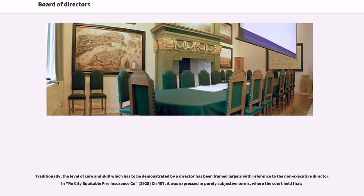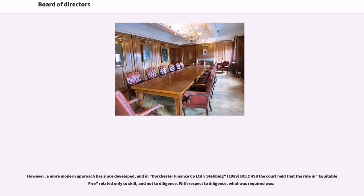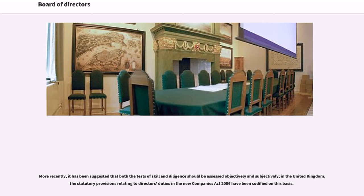Traditionally, the level of care and skill which has to be demonstrated by a director has been framed largely with reference to the non-executive director. In Re City Equitable Fire Insurance Company, 1925, Ch. 407, it was expressed in purely subjective terms. However, this decision was based firmly in the older notions that prevailed at the time as to the mode of corporate decision-making and effective control residing in the shareholders; if they elected and put up with an incompetent decision-maker, they should not have recourse to complain. However, a more modern approach has since developed, and in Dorchester Finance Company Limited v. Stebbing, 1989, BCLC 498, the court held that the rule in Re City Equitable Fire related only to skill, and not to diligence. With respect to diligence, a dual subjective and objective test was applied, deliberately pitched at a higher level. More recently, it has been suggested that both the tests of skill and diligence should be assessed objectively and subjectively.